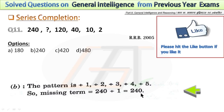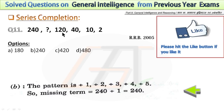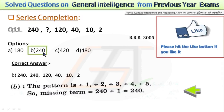In this question, the series is a division series. I have shown the pattern in the explanation. You can also solve the series by multiplication: 2 times 5 is 10, 10 times 4 is 40, 40 times 3 is 120, 120 times 2 is 240. So the correct answer is 240.